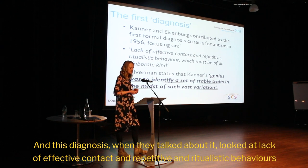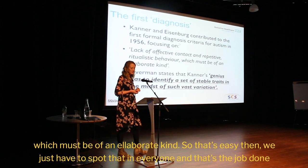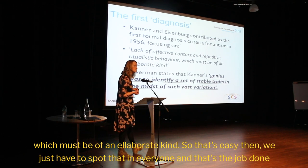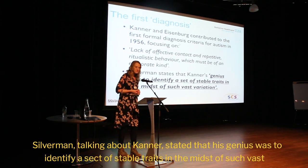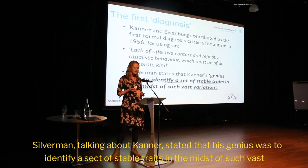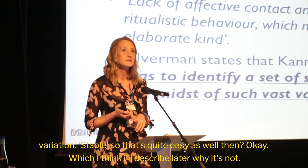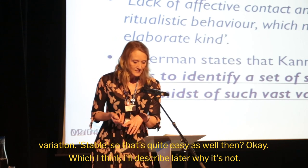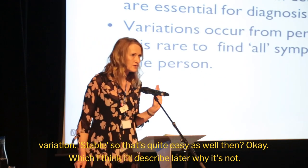That first diagnosis looked at lack of affective contact and repetitive and ritualistic behaviours, which must be of an elaborate kind. Silverman, talking about Kanner, stated that his genius was to identify a set of stable traits in the midst of such vast variation. Stable — so that's quite easy as well then, which I'll describe later how it's not.